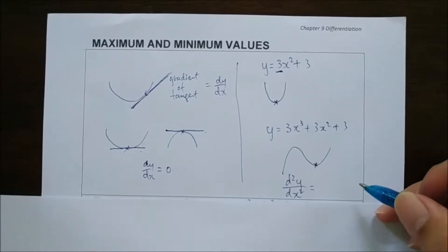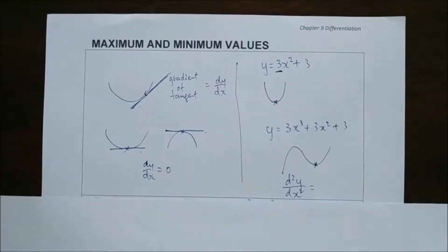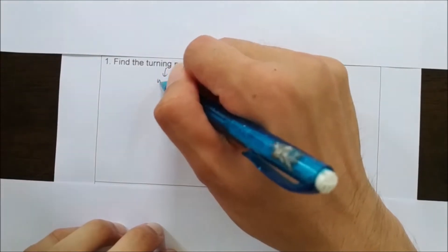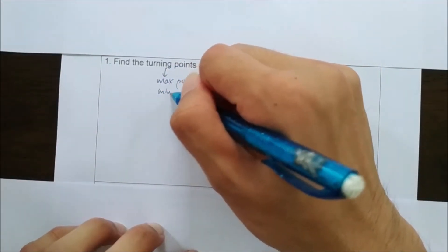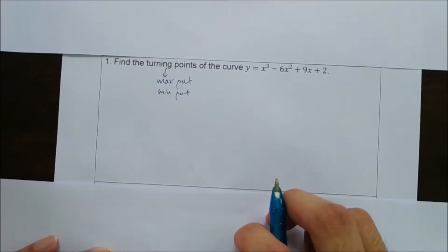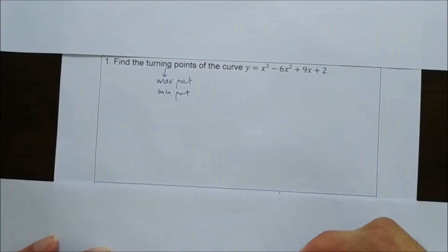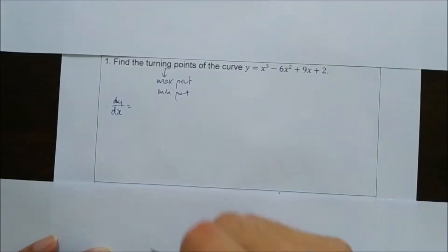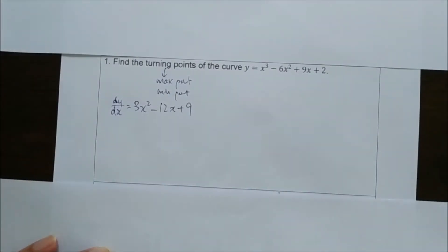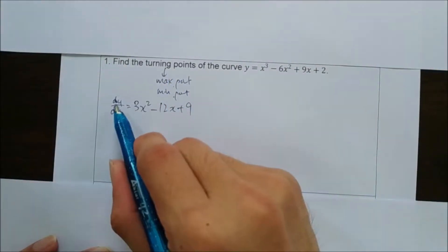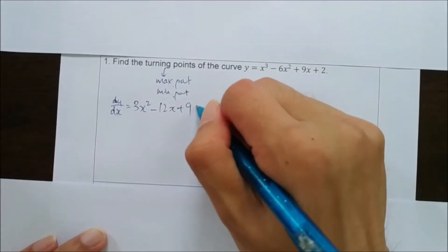I'm going to show you in the example questions. The first question: find the turning points of the curve y = x³ - 6x² + 9x + 2. The turning points refer to both the maximum point and minimum point, so we want to find the coordinates of both. The first thing we do is differentiate y with respect to x to get dy/dx. At the turning points, dy/dx equals 0.